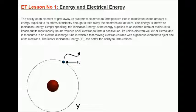Simply speaking, the ionization energy is the energy supplied to an isolated atom or molecule to knock out its most loosely bound valence shell electron to form a positive ion. Its unit is electron volt (eV) or kilojoule per mole and is measured in an electric discharge tube in which a fast-moving electron collides with a gaseous element to eject one of its electrons.